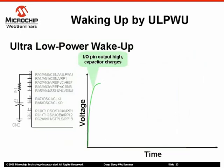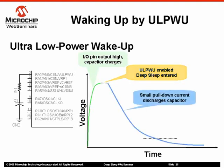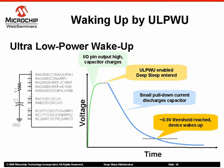Before entering DeepSleep, firmware will configure RA0 as an output pin and drive it high to VDD. The I/O pin will charge the capacitor to VDD voltage. Once the capacitor is charged, firmware will let the ultra-low power wakeup module take control of the RA0 pin, and DeepSleep mode is entered. During DeepSleep, the ultra-low power wakeup module will provide a small pull-down current to the pin, allowing the capacitor to slowly discharge over time. When the voltage of the capacitor finally drops to the I/O pin's trip point — nominally ½ VDD — the device will wake up from DeepSleep.